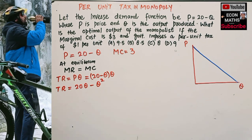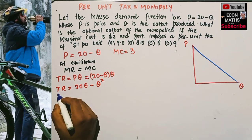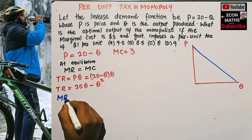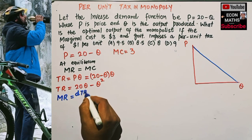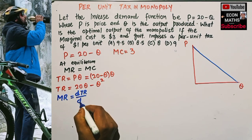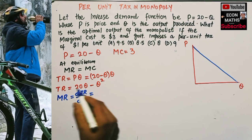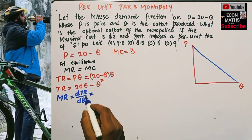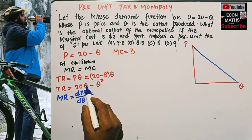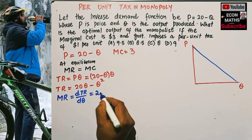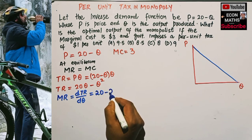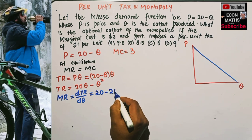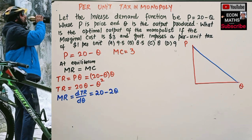The marginal revenue is simply the derivative of the total revenue function with respect to output. The derivative of 20q gives us 20, and the derivative of q squared by the power function rule gives us 2q. So marginal revenue = 20 minus 2q.